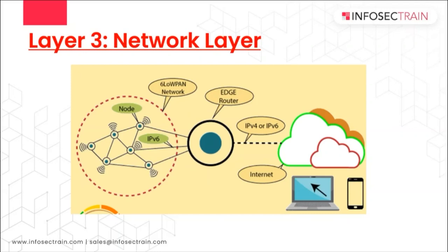Path determination decides which particular path the data will be sent through. If a path has congestion, the Network Layer can change the path based on current network load, to avoid bottlenecks formed when too many packets are present in the same subnet at the same time. So the Network Layer can help control congestion as well. This is all about Layer 3 — the Network Layer — where IP addressing is done.